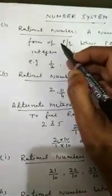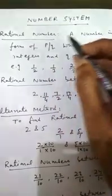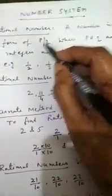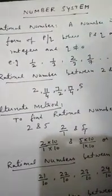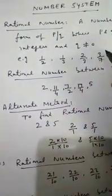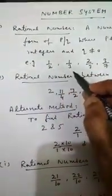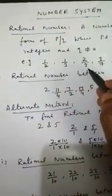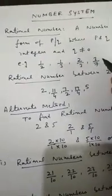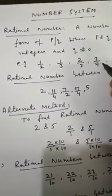Hello students. In the previous video we studied about a rational number — a number in the form of p by q, where p and q are integers and q is not equal to 0. For example, 1 by 2, 1 by 3, 2 by 3, 3 by 7. Here you can see the numerator and denominator are integers and the denominator is not equal to 0.